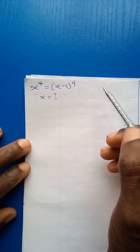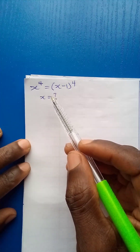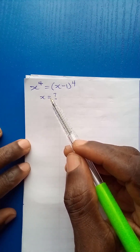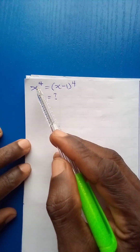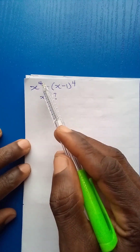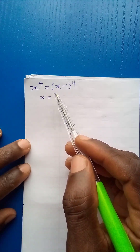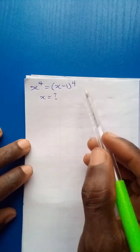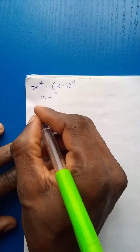Hello everyone and welcome to another video in my channel. In this video, we have another nice Olympiad challenge to solve. We are given x to the power 4 is equal to x minus 1, all in a bracket, to the power 4. We are asked to find the value of x.